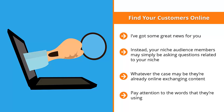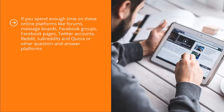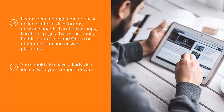Pay attention to the words your audience is using. Pay attention to the solutions they are already talking about, and understand the shortcomings of those solutions. If you spend enough time on online platforms like forums, message boards, Facebook groups, Facebook pages, Twitter accounts, Reddit, subreddits, and Quora or other question-and-answer platforms, you should have a clear understanding of who your audience members are and what their expectations are.